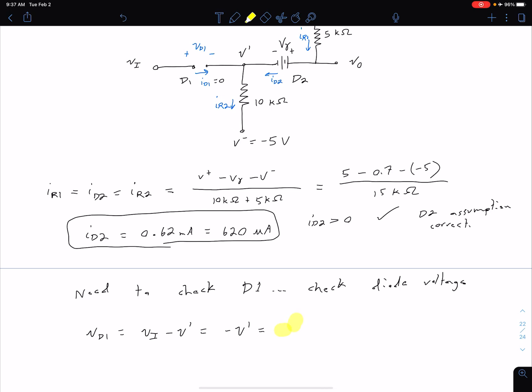switch back to my pen, is negative because we had the negative out front here, negative V^- plus I_R2 times the 10k resistance.